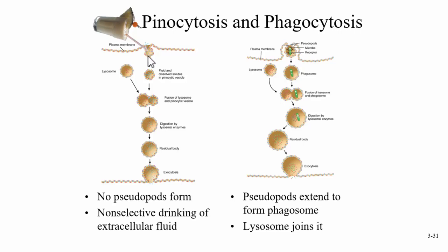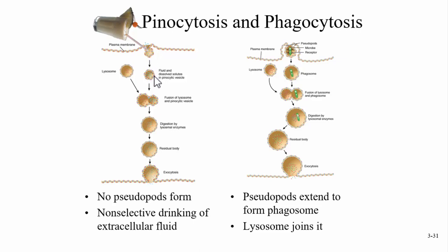In pinocytosis, the cell is drinking. Fluid and dissolved solutes are taken into a pinocytic vesicle. A lysosome — a digestive organelle within the cell — fuses and dumps enzymes onto the ingested material, which is then digested by lysosomal enzymes. A residual body remains and is expelled through exocytosis. Pinocytosis is non-selective drinking of extracellular fluid — the membrane dips down, sucks in the fluid, and pinches off a vesicle.